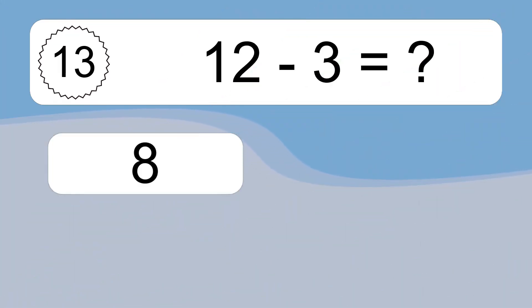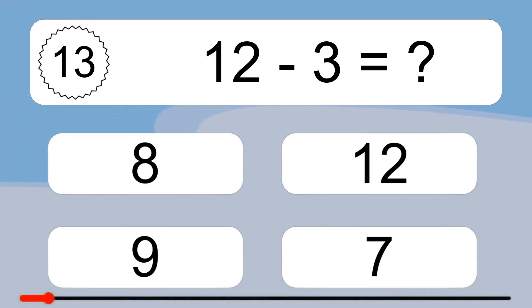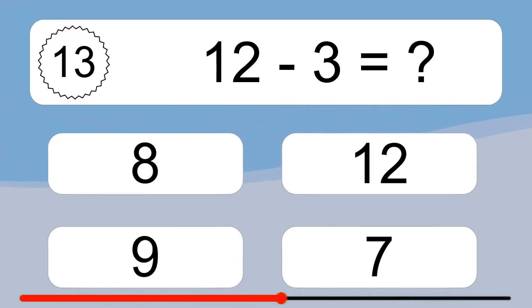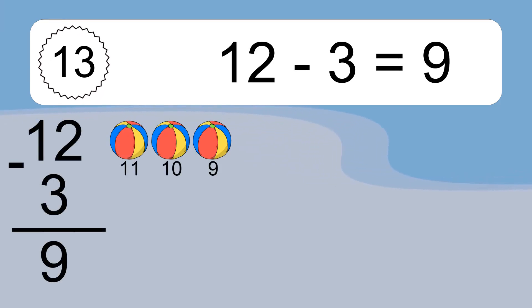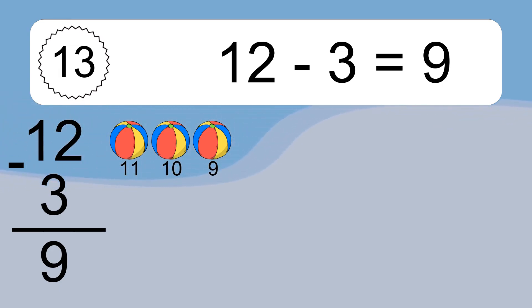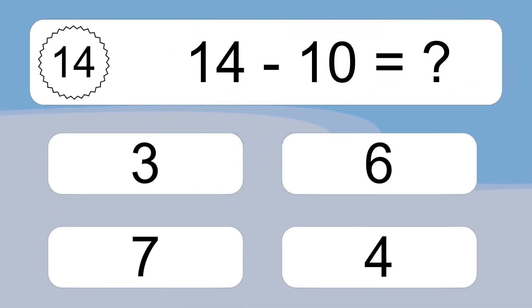12 minus 3 equals what? 12 minus 3 equals 9. Let's count it. 11, 10, 9.